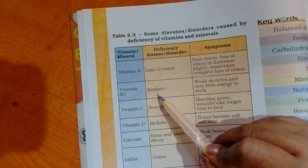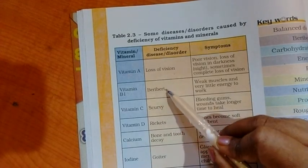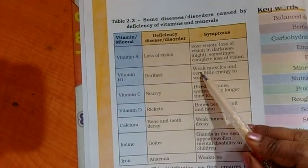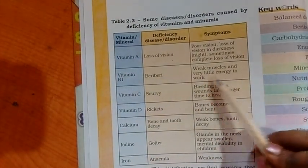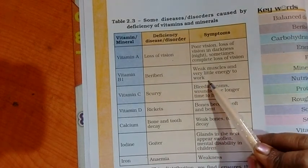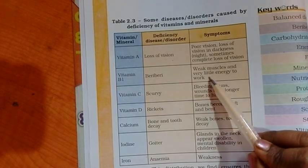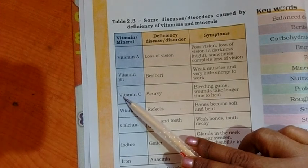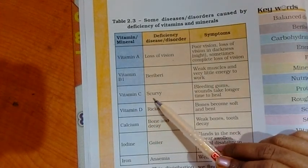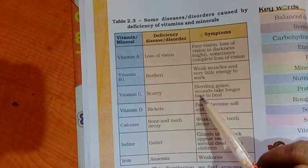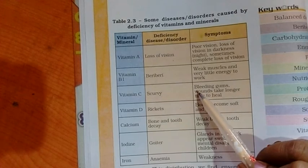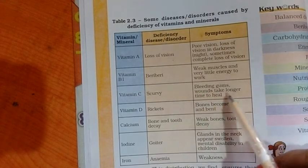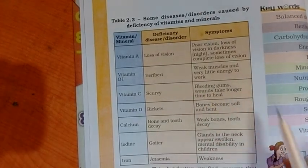Deficiency of vitamin B1 causes beriberi. Symptoms are weak muscles and very little energy to work. Deficiency of vitamin C causes scurvy. Symptoms of scurvy include bleeding gums and wounds that take a longer time to heal.